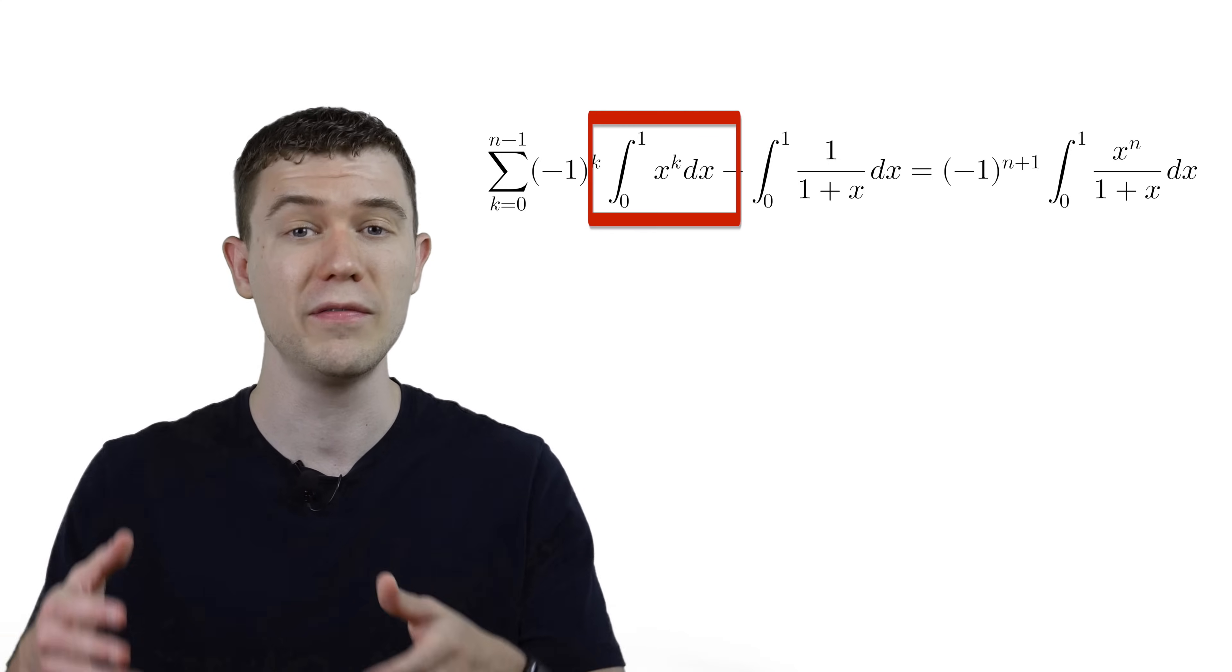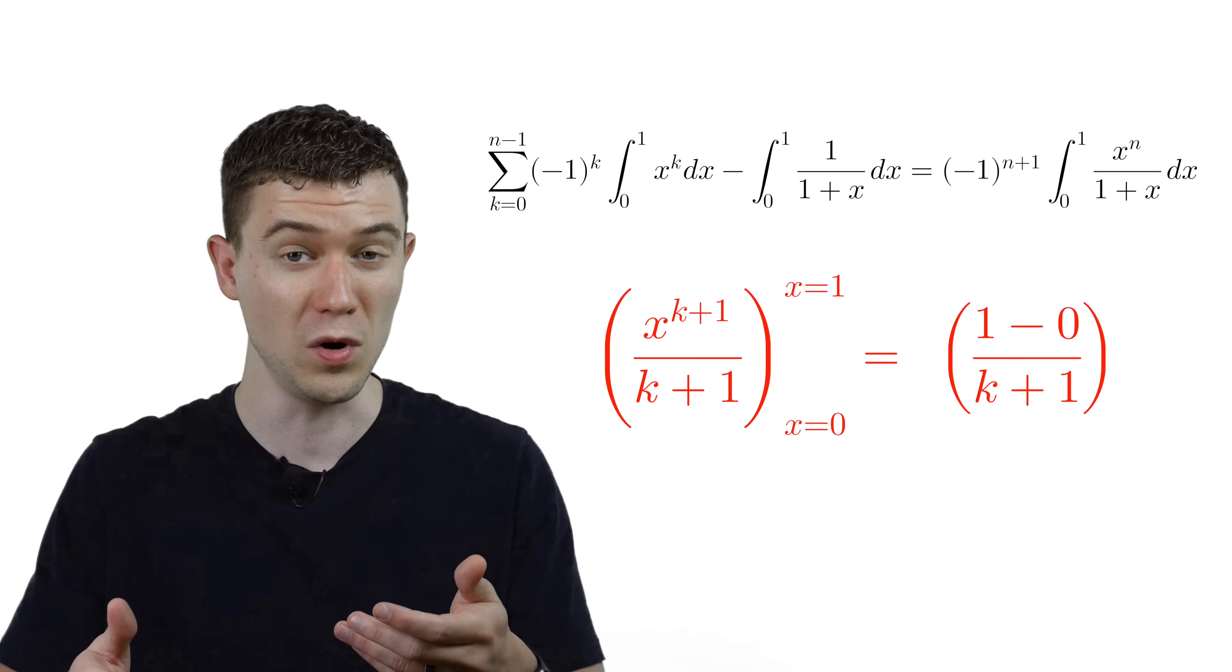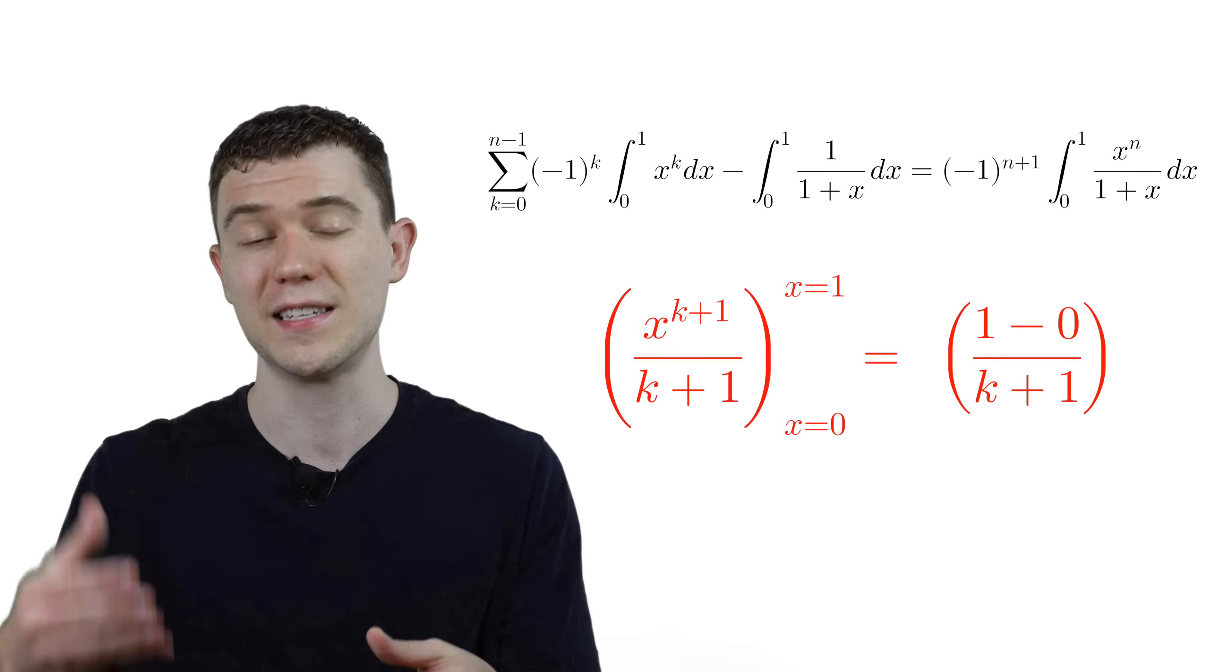For example, the antiderivative of x to the k dx, that would be x to the k plus 1 over k plus 1, and then we evaluate x from 0 to 1.